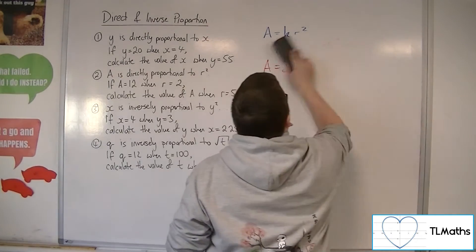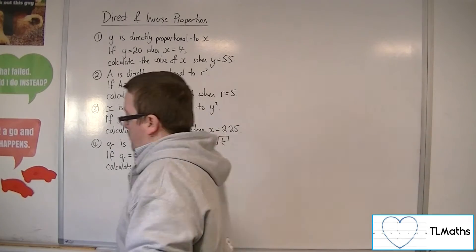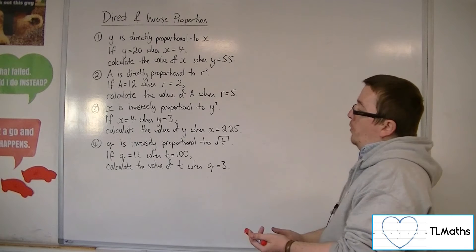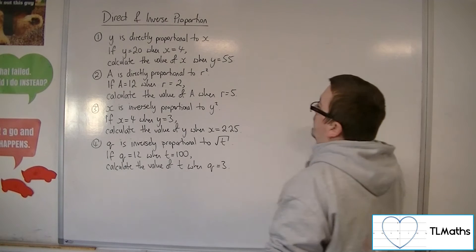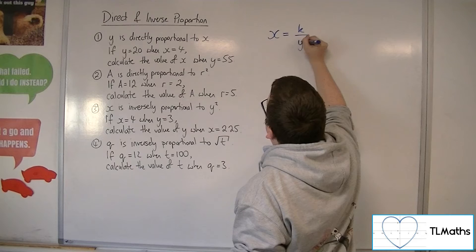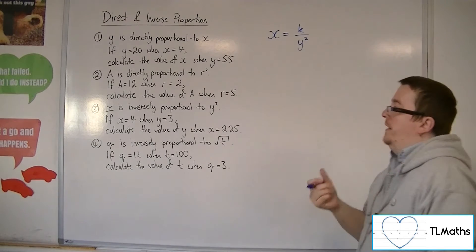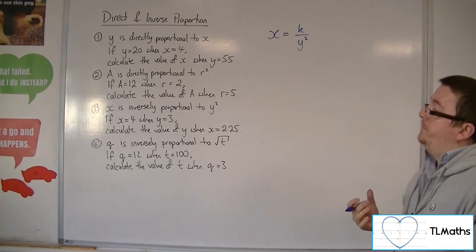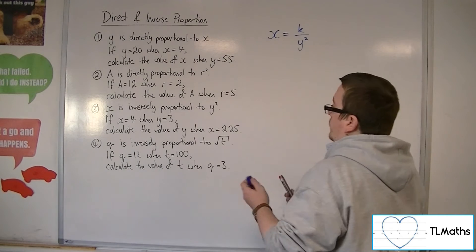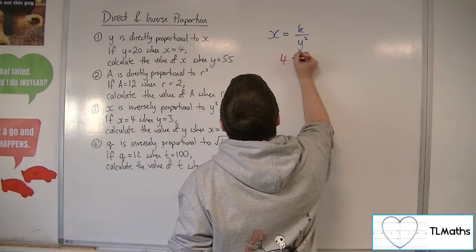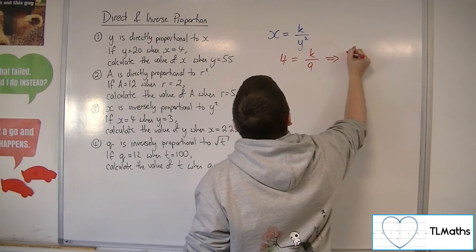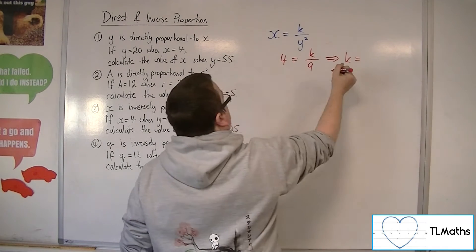Now the next two examples are inverse proportion. So x is inversely proportional to y squared. So that means that x is equal to k over y squared. Notice the change in setting up the problem here. If x is 4 when y is 3, so x is 4, y is 3, so 3 squared is 9. So k must be equal to 4 nines, so 36.